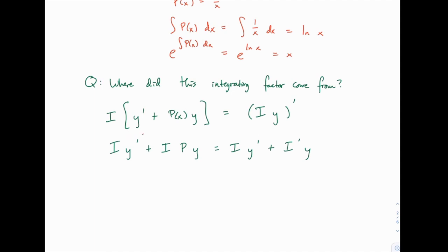And if you notice, i times y prime appears on both sides. So we can subtract that off, cancel it from both sides. And then we're just left with i times p times y on the left side, and i prime times y on the right side.